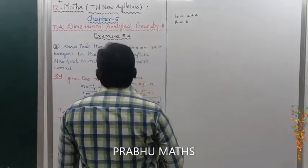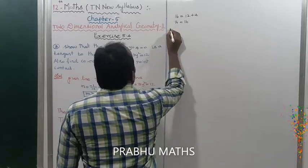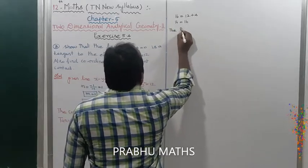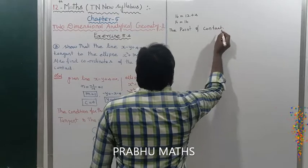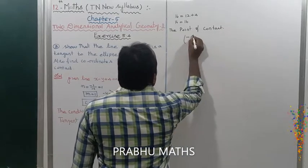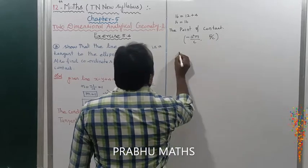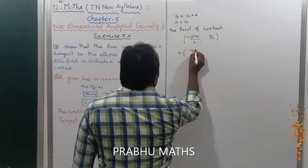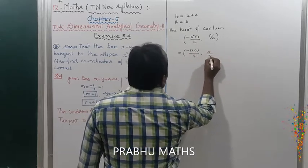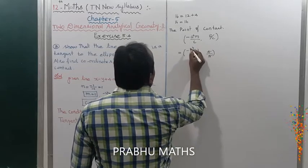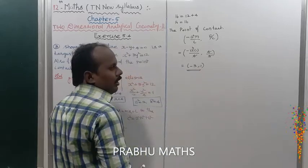Next, to find the point of contact. The formula is minus a square m divided by c, and b square divided by c. So: minus 12 into 1 divided by 4 gives minus 3, and 4 divided by 4 gives 1. Therefore the point of contact is (minus 3, 1).